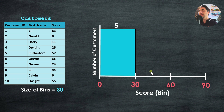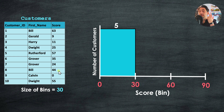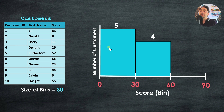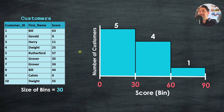Moving to the second bin (30–60), we scan the table and find four customers with scores between 30 and 60. For the last bin (60–90), since we already have nine customers accounted for, we have only one — customer number one — whose score falls in this range. With that, we have created a histogram for the scores: create the bins, count the data points inside each bin.